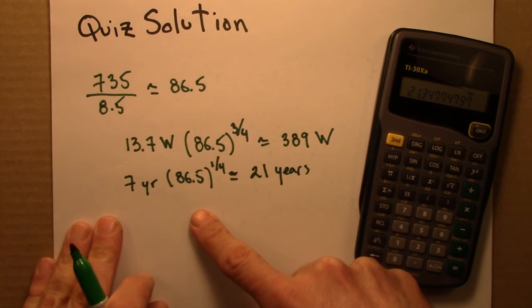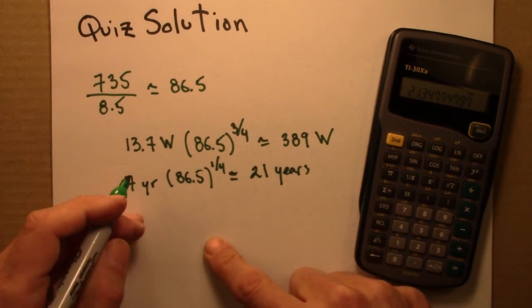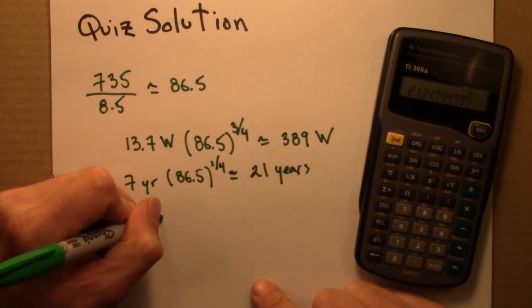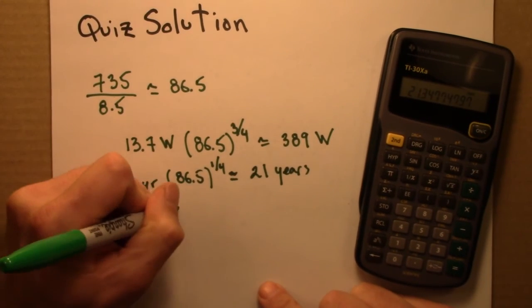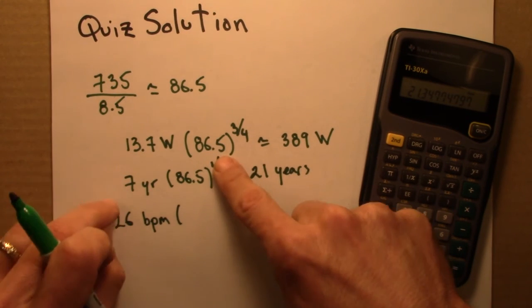And lastly, let's do heart rate. So heart rate for the foxes is 126 beats per minute. And so this is a rate that goes as a quarter.